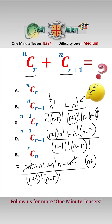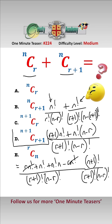This gives us N plus 1 factorial over R plus 1 factorial times N minus R factorial, which by definition is N+1CR+1 — which is answer D.